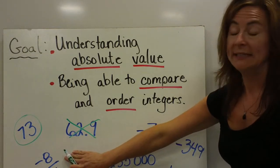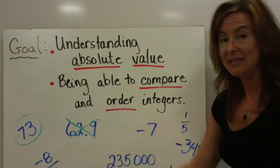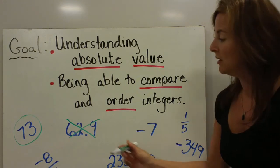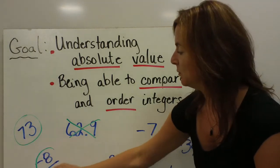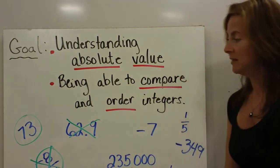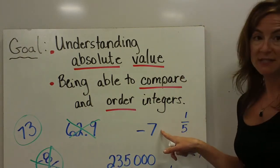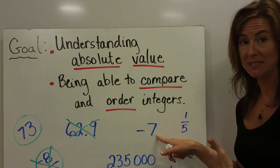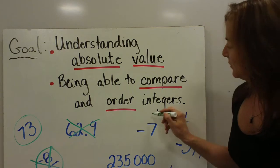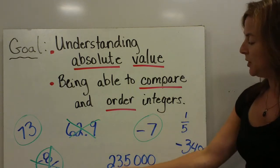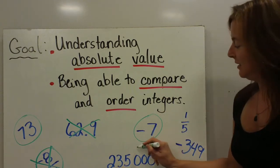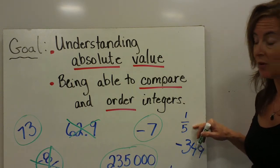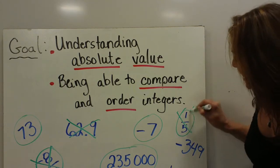Here we have negative 8 elevenths. This is a fraction, which means it's a part of a number — we don't even have one whole. So this would be a non-example of an integer. Negative 7 is the collection of all the whole numbers and their opposites, so this would be considered an integer. 235,000 is a whole number. One-fifth is a part of a number or a fraction, so this is not an integer.